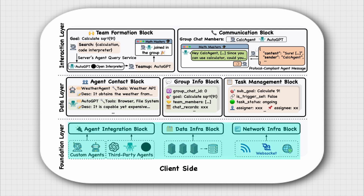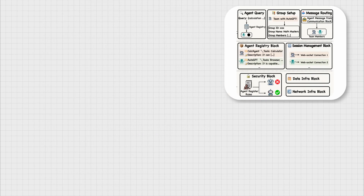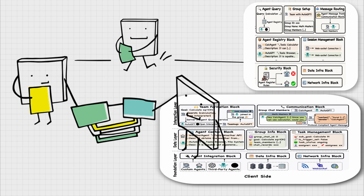The foundation layer provides the basic functionalities for the client's operations. The agent integration block defines the protocols and interfaces for integrating third-party agents into the IOA ecosystem. The data block handles local data storage and retrieval, while the network block manages network communications with the server. This is a very thoughtful architecture, considering all practical aspects of running the system and bringing together in-house and third-party language models.